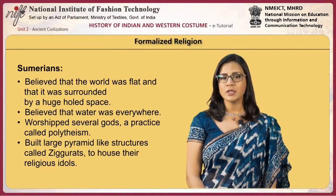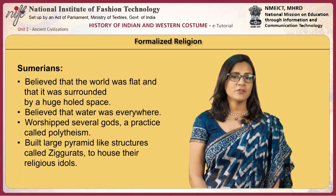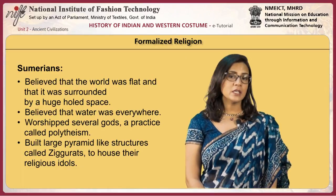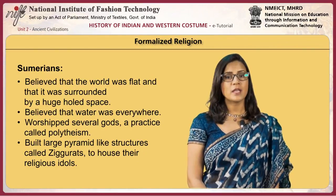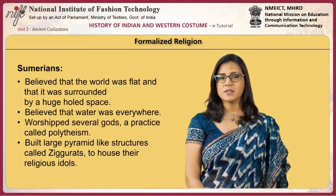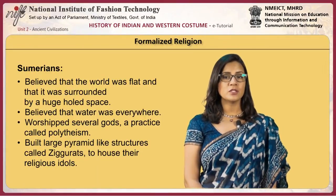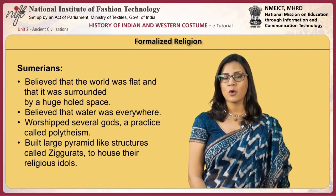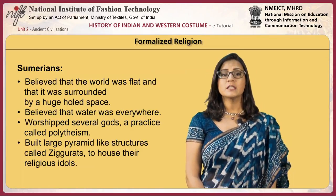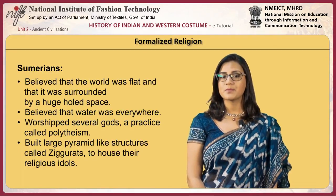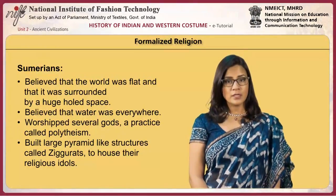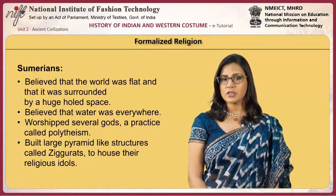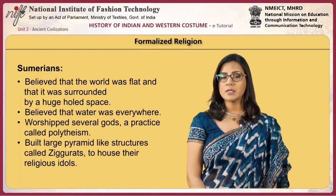Sumerian religion was the first to be recorded. They believed that the world was flat and surrounded by a huge whole space, and that water was everywhere. They worshipped several gods, a practice called polytheism. The religious priest was seen as earthly representative of God and therefore considered the most powerful person in Sumerian society. Later, the warrior kings would take that position. They built large pyramid-like structures called ziggurats to house their religious idols.